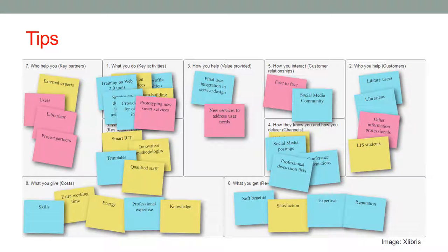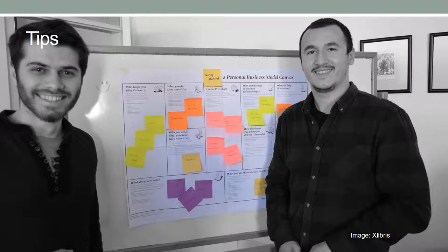Tips for filling the canvas: 1. Make each group fill in one canvas based on their shared model. 2. Allocate enough time for this exercise to allow teams to discuss every segment in the canvas. 3. Use the right size of the canvas — A1 or A0 minimum. 4. Provide help when needed for further explanations about canvas segments. 5. Encourage participants to use keywords and write them on sticky notes. 6. Encourage participants to write with big letters so that it can be read from a distance.